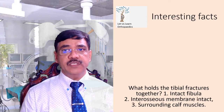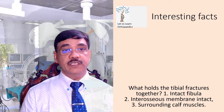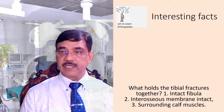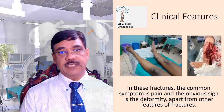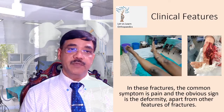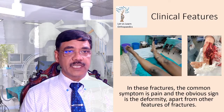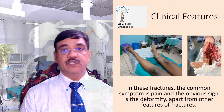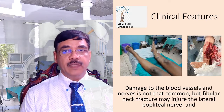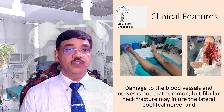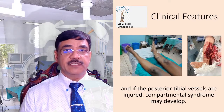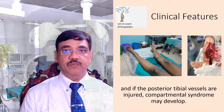What holds the tibial fractures together? It is the intact fibula, the interosseous membrane which remains intact, and the surrounding calf muscles. The common symptom is pain and an obvious sign is deformity. Damage to blood vessels and nerves is not that common, but fibular neck fractures may injure the lateral popliteal nerve. If the posterior tibial vessels are injured, compartment syndrome may develop.